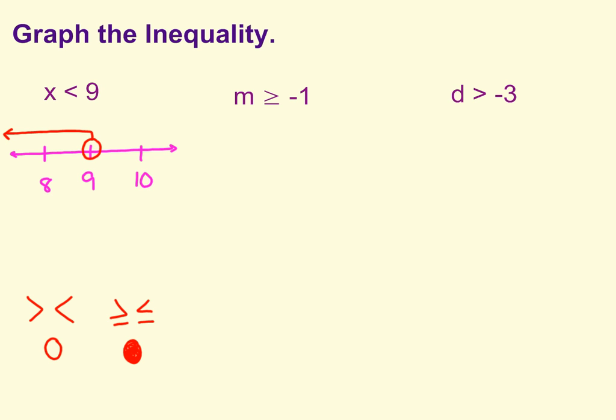Alright, moving on, we have m is greater than or equal to negative 1. So first we'll go ahead and set up our number line, putting negative 1 in the middle, and then the numbers on each side. On the right side will be a 0, on the left side will be a negative 2.